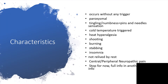What are the possible characteristic features of neuropathic pain? It occurs without any trigger and could be paroxysmal in nature, with possibility of tingling and numbness — that is sensation of pins and needles. It could be triggered by cold temperature, that is cold allodynia, or heat allodynia. It could be shielding, burning, or stabbing.